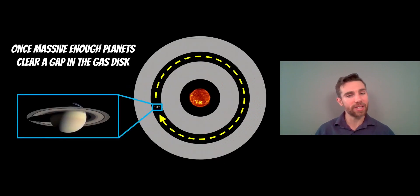Once it gets to this size it gravitationally clears out this gap. It has enough mass and enough gravitational force on the disk to clear out its orbit basically of any material or it causes a significant reduction in the gas and dust in its local orbital area.